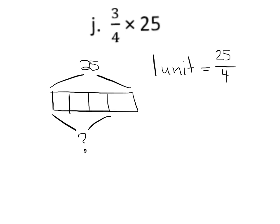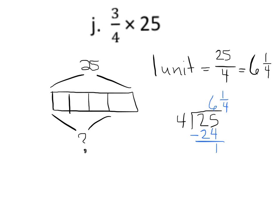The value of 1 unit is going to be 25 divided by 4. Let's do that longhand — 4 times 6 is 24, with 1 left over, so it's 6 and 1/4. The value of 1 unit is 6 and 1/4, so we fill in each section: 6 and 1/4, 6 and 1/4, 6 and 1/4, and 6 and 1/4.